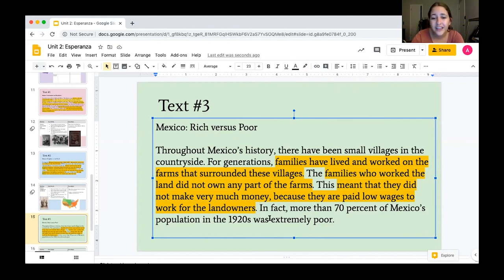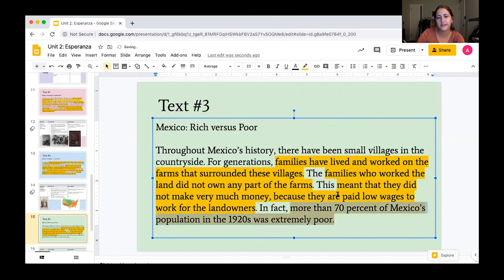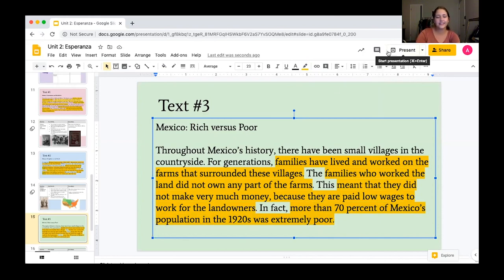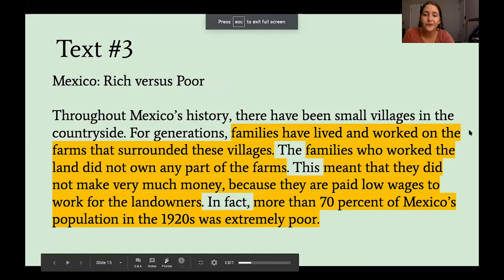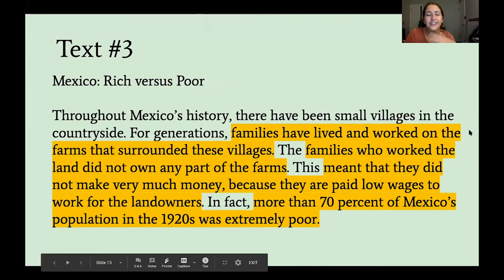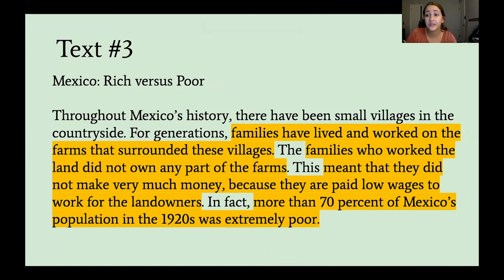The families who worked the land did not own any part of the farm — that's important because we know the landowners are the ones who own the land, and those who worked it were just paid and employed to work on it. We might ask ourselves why they didn't just buy the land — well, it's because they didn't make very much money and were paid low wages. So it would be hard to own something like that. In fact, more than 70% of Mexico's population in the 1920s was extremely poor. Go ahead and pause for about 10 minutes to write down your notes.